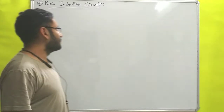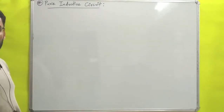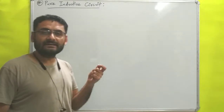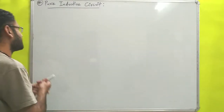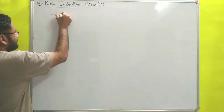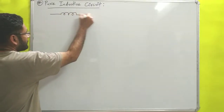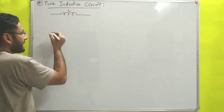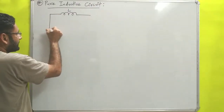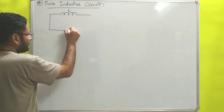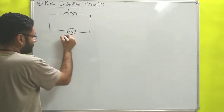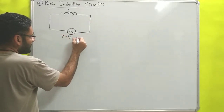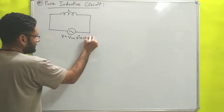Without wasting much time, let us start. A pure inductive circuit means a circuit in which only and only an inductor is used. For example, we will take one inductor whose inductance is L, and that inductor is connected with one AC supply of V volts, which equals Vm sine of omega t.